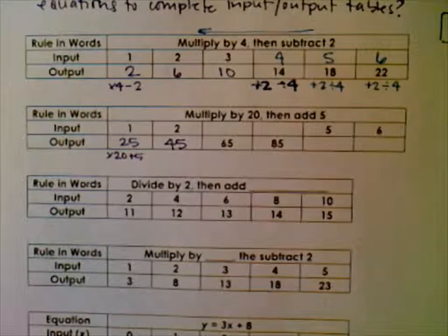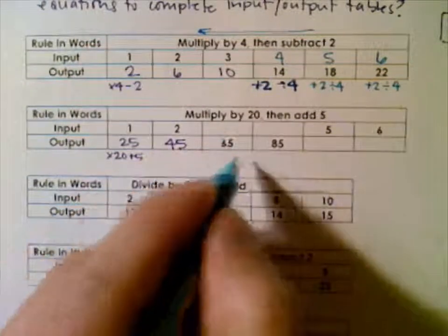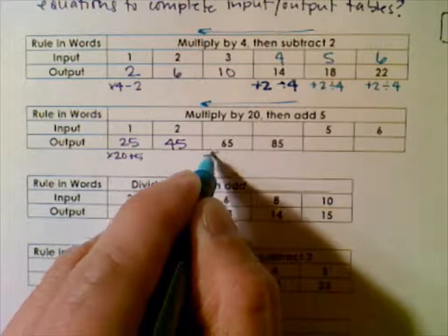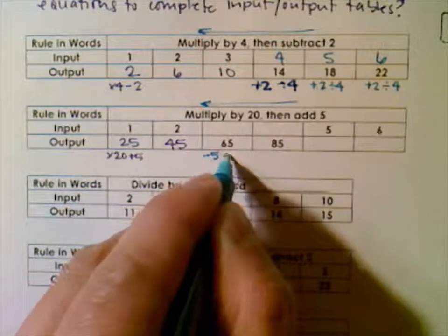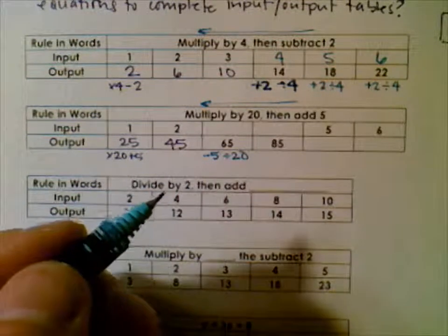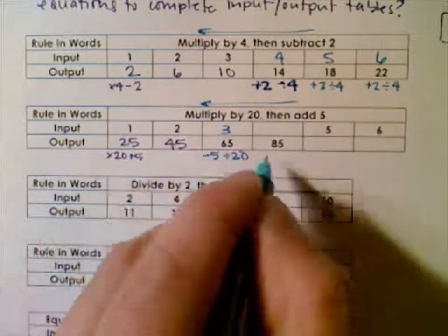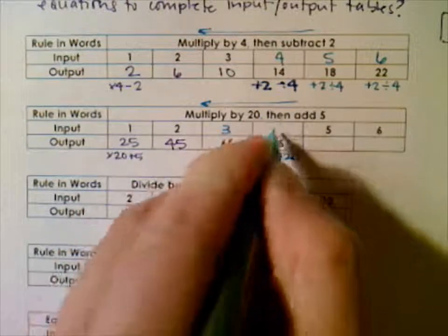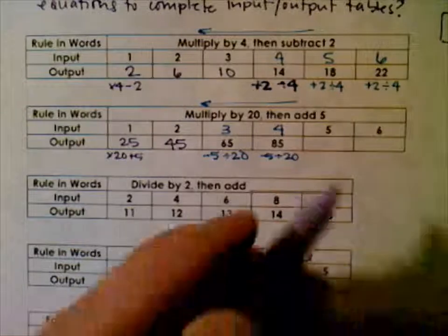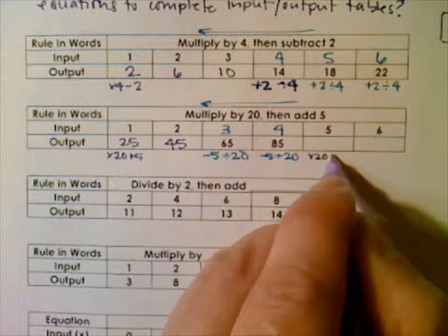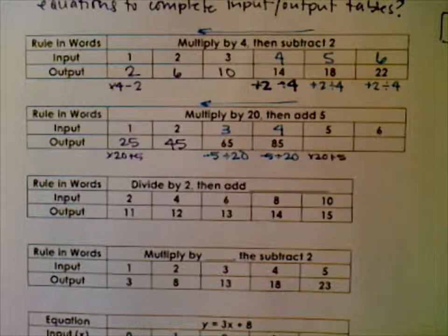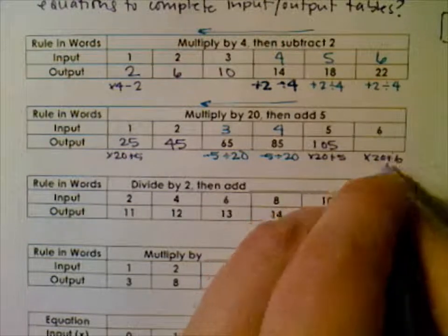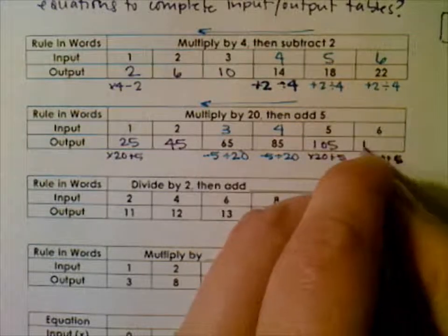Now we're given the output, so we have to go backwards. Instead of adding 5 we subtract 5, and instead of multiplying by 20 we divide by 20. So: 65 minus 5 is 60, divided by 20 is 3. Then 85 minus 5 is 80, divided by 20 is 4. Going forward again: 5 times 20 is 100, plus 5 is 105. And 6 times 20 is 120, plus 5 is 125.